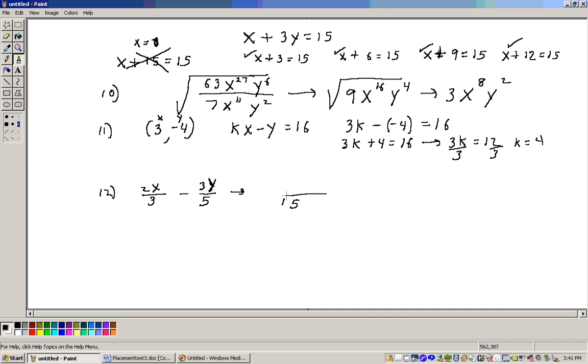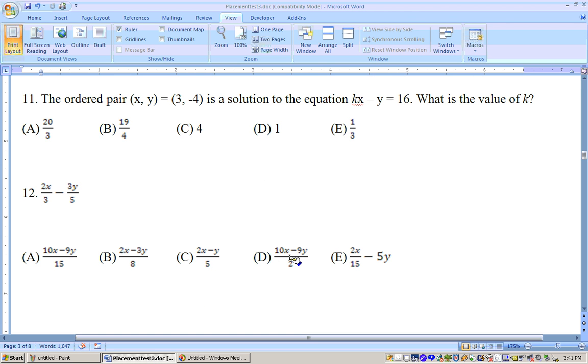So let me write a 15 right here. And we just say 3 goes into 15 five times. 5 times 2x is 10x minus. Now 5 goes into 15 three times, 3 times 3y is 9y. And that would be the answer to problem 12, 10x minus 9y over 15. And if we check, that's answer A on that one.